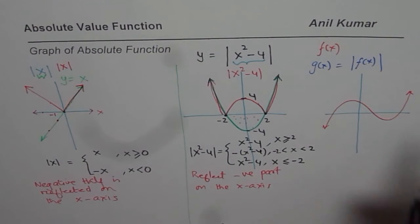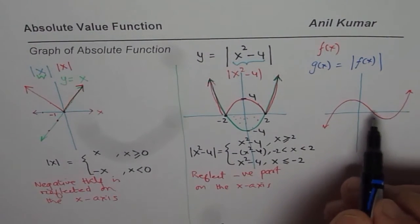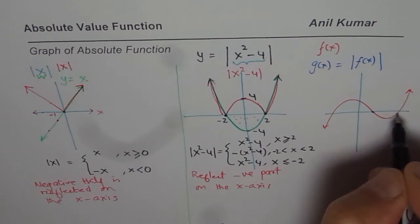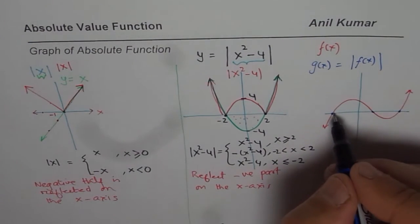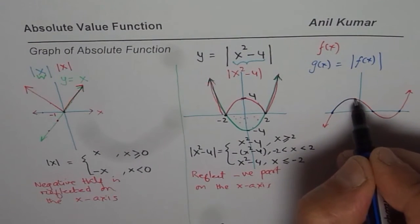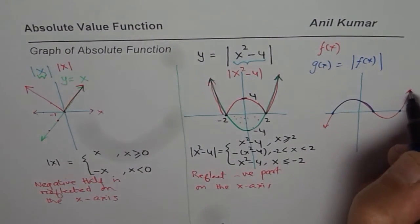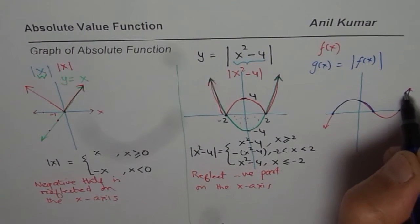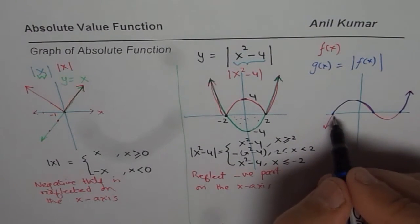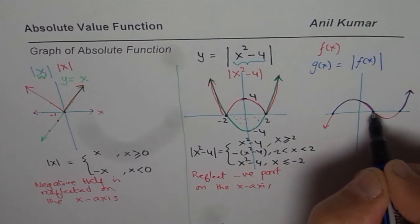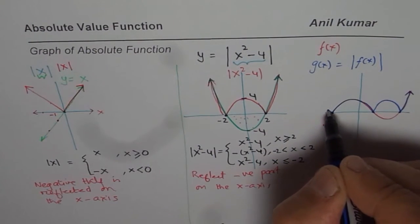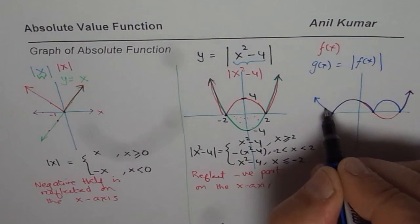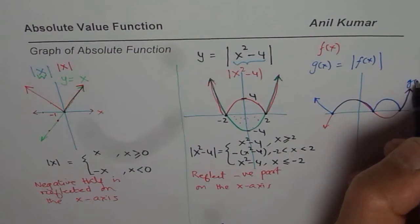To sketch the graph of the absolute value of the given function, first locate the zeros. The positive part is retained as such — no changes needed there. As for the negative half, you need to reflect it on the X-axis. So I'm reflecting this part here and this part there. The function shown in blue is g(x) = |f(x)|.